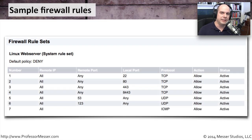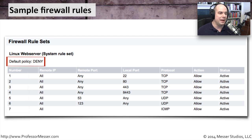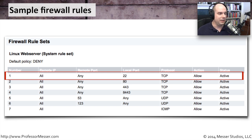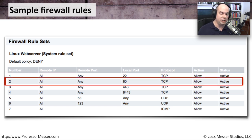Let's step through a very simple firewall rule base. This rule set was taken directly from an internet service provider — their default configuration for web servers on Linux hosts. The rules are numbered one through seven, processed top to bottom, with an implicit deny as the default policy. Rule number one says: from any remote IP address on any remote port, connecting to this web server on port 22 using TCP — allow it. Port 22 is SSH, so this rule allows anyone to SSH to the firewall.